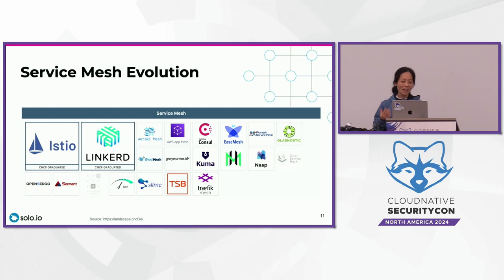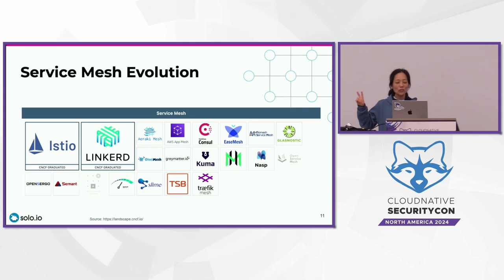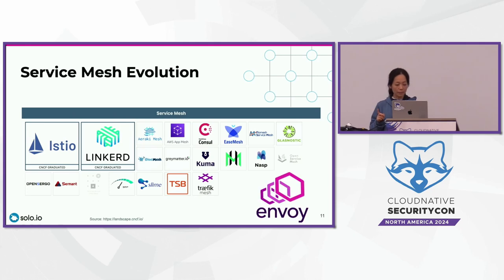From the CNCF landscape — how many of you actually hate the CNCF landscape? It's too big. There are two service mesh projects that CNCF has graduated. I want to highlight Istio and Linkerd on the landscape. Out of all the mesh projects, all the projects are using Envoy as the proxy except Linkerd. In Istio, we have many happy sidecar users.